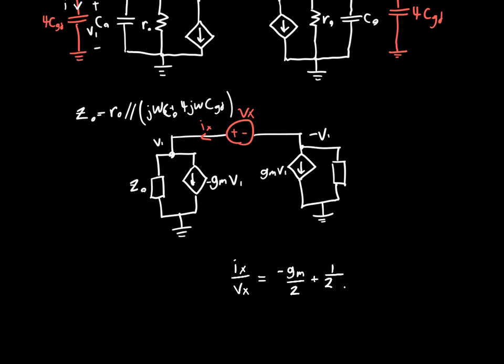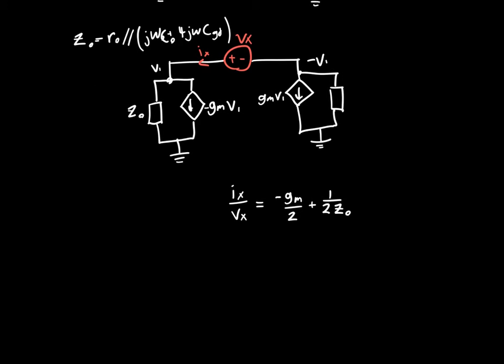because we're just replacing R0 with Z0. And this is why I was using admittance from the beginning instead of impedance, because it makes it easier to expand. If we say that instead this is minus GM over 2 plus 1 half Y0, because Y0 is literally just 1 over Z0, then Y0 is much easier to express in terms of all the values that were given. So minus GM over 2 plus 1 half. Well, the first part of Y0 is 1 over RO. The second part of Y0, it's in parallel with a capacitance, so j omega CO. And that capacitance is CO plus 4CGD.